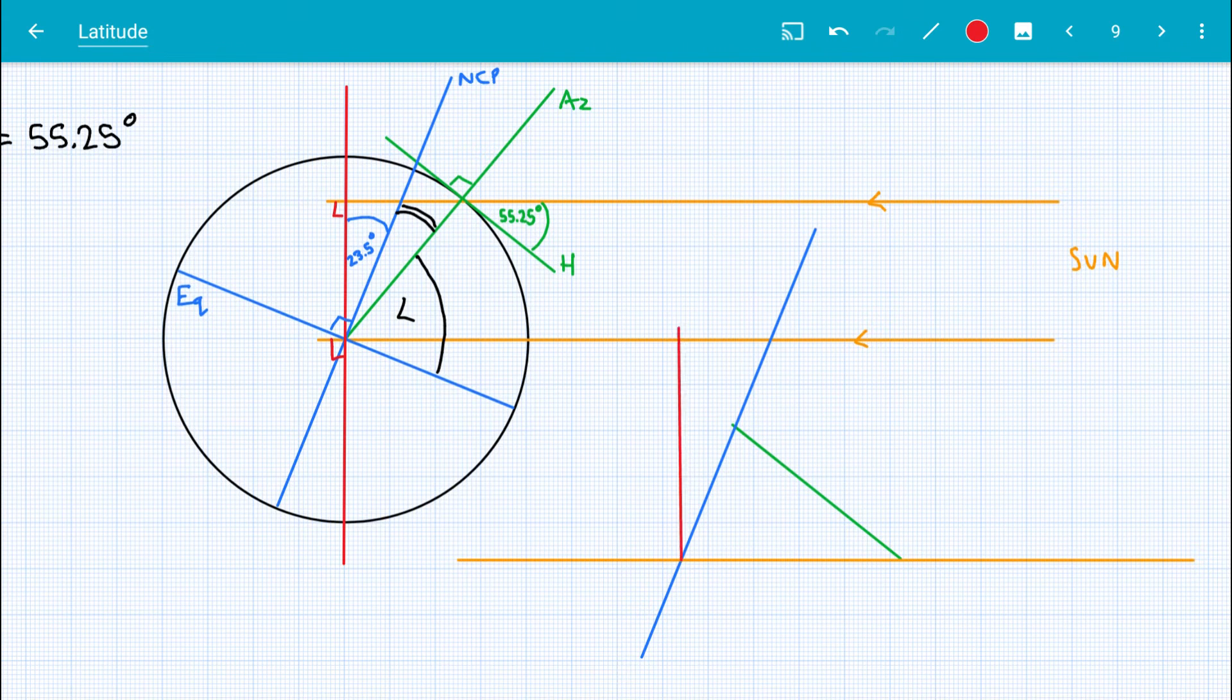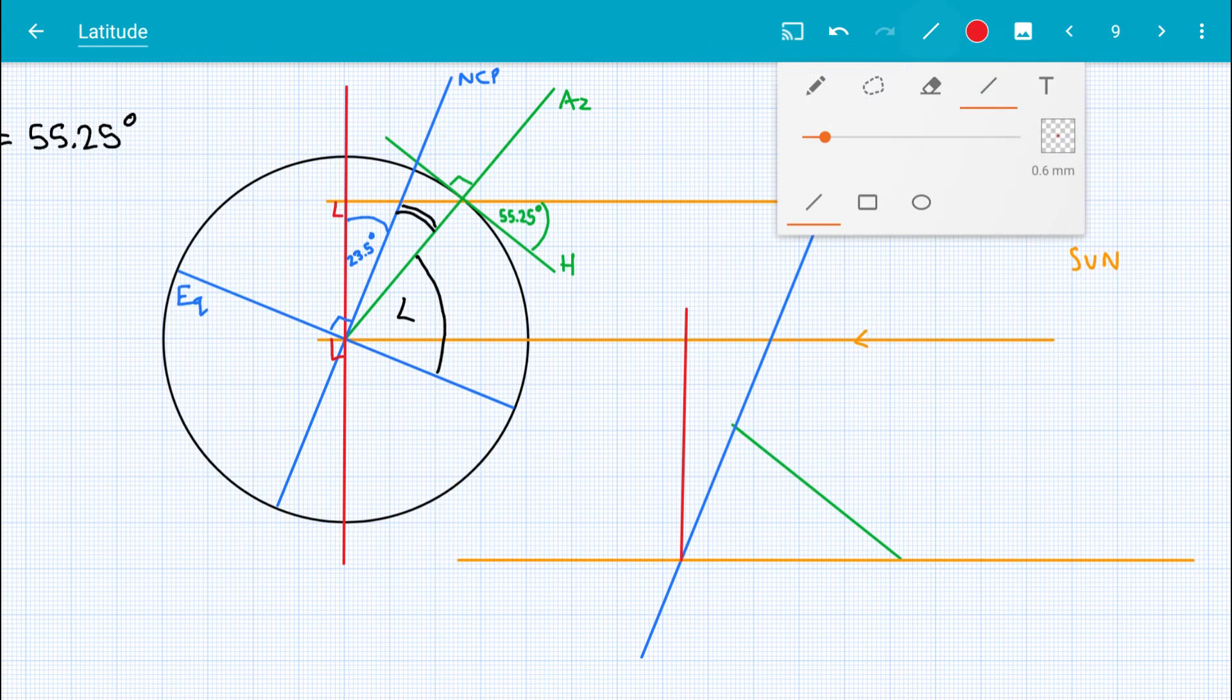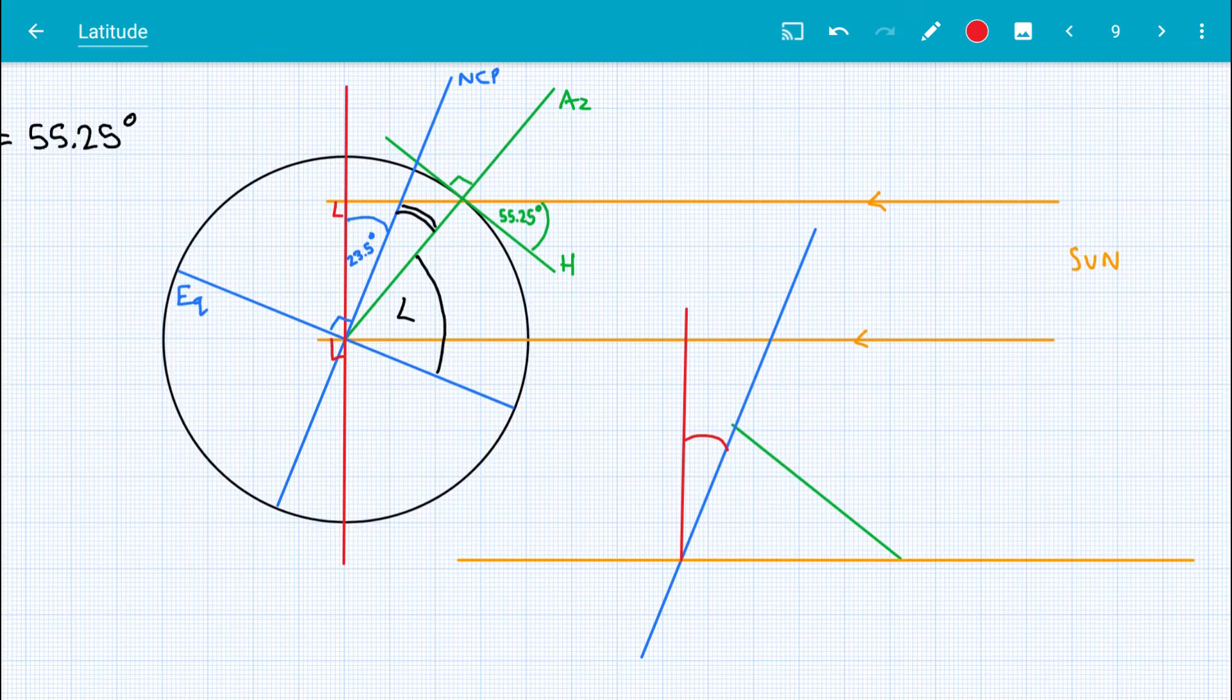So for example, we can say, look, there's a line that's perpendicular to the orange line here. And we know that that is 23.5 degrees.